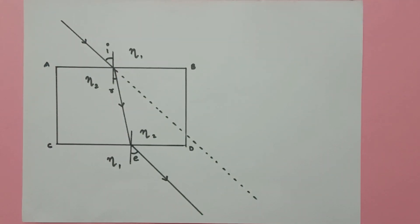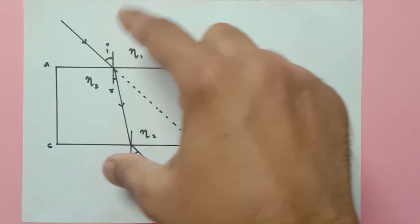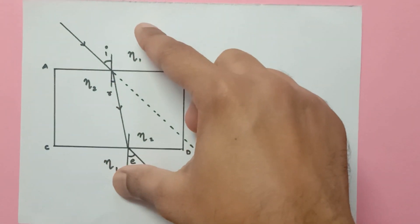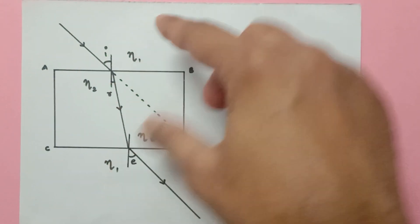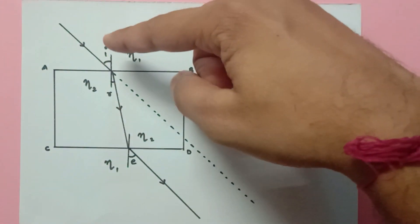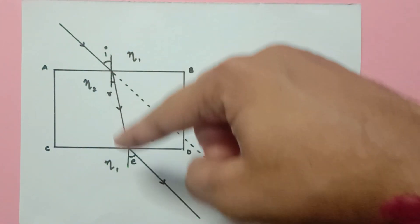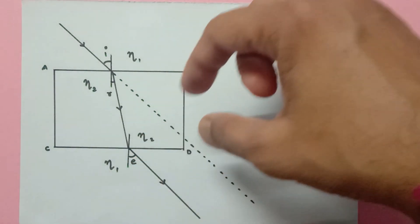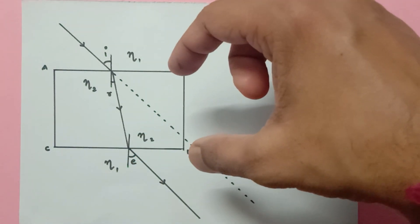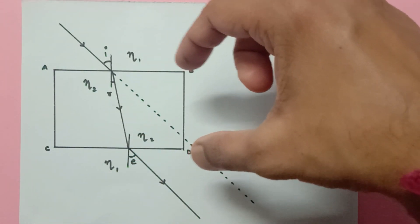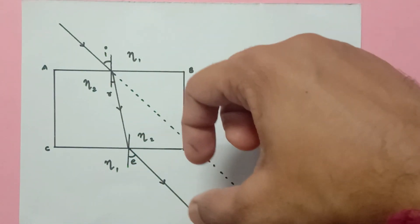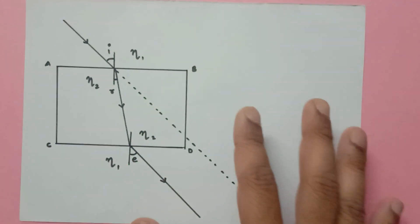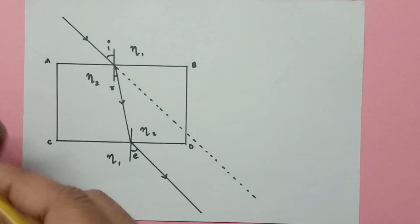Today my goal is to explain the relationship between the angle of incidence and angle of emergence in the case of a glass slab.